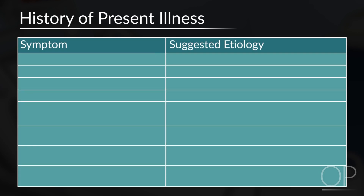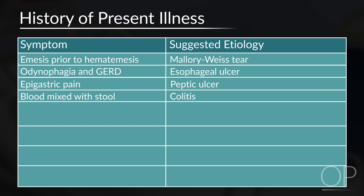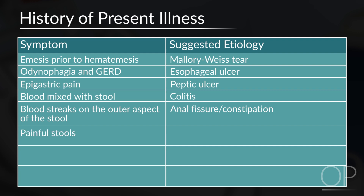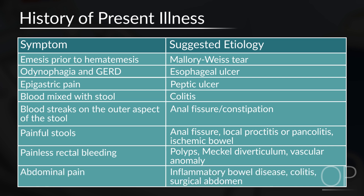During the history of present illness, certain symptoms can suggest certain etiologies to the bleeding. Emesis prior to hematemesis may suggest a Mallory-Weiss tear. Odynophagia or gastroesophageal reflux may suggest esophageal ulcers. Epigastric pain may suggest peptic ulcer. Blood mixed in the stool suggests colitis. Blood streaks on the outside aspect of stool may suggest an anal fissure. Painful stools suggest anal fissures, local proctitis or pancolitis, or ischemic bowel. Painless rectal bleeding is associated with polyps, a Meckel's diverticulum, or a vascular anomaly. Abdominal pain can be seen in patients with inflammatory bowel disease, colitis of any etiology, or surgical abdomen.